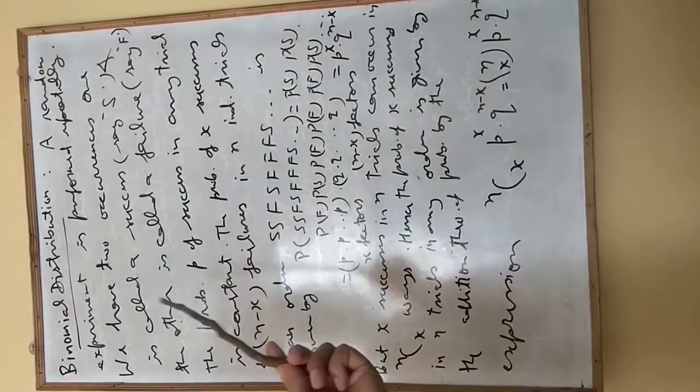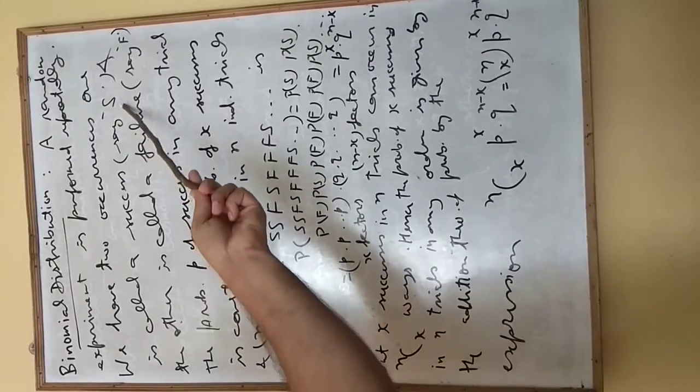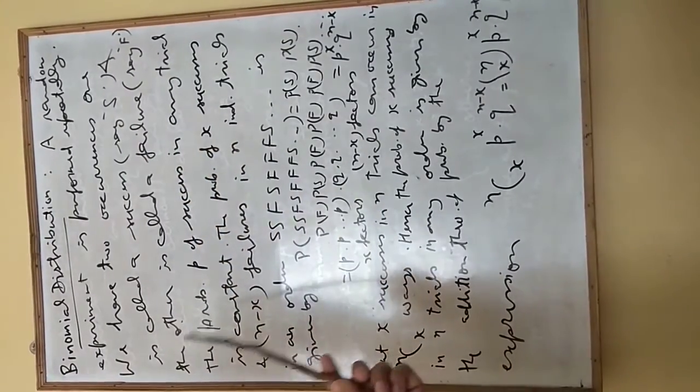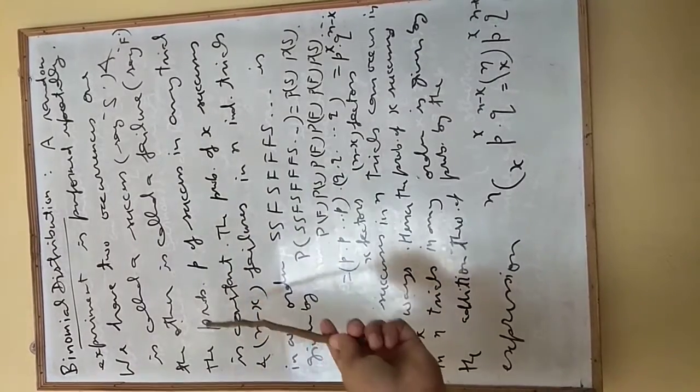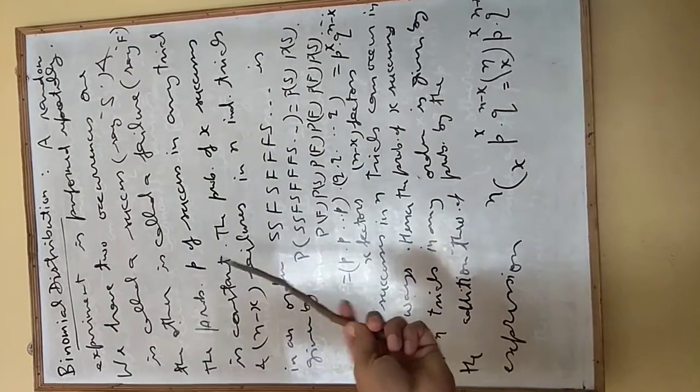So in any trial, one outcome is success and the other is failure. The probability p of success in any trial is constant. For each trial, we have this probability p of success as a constant.